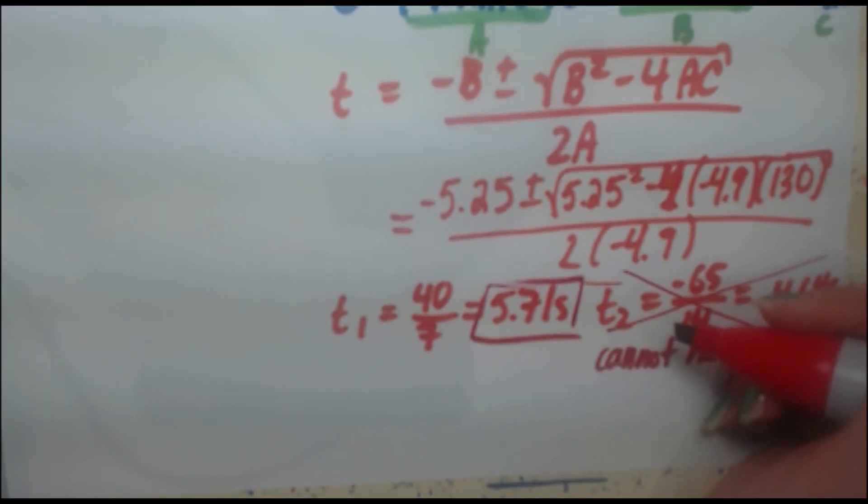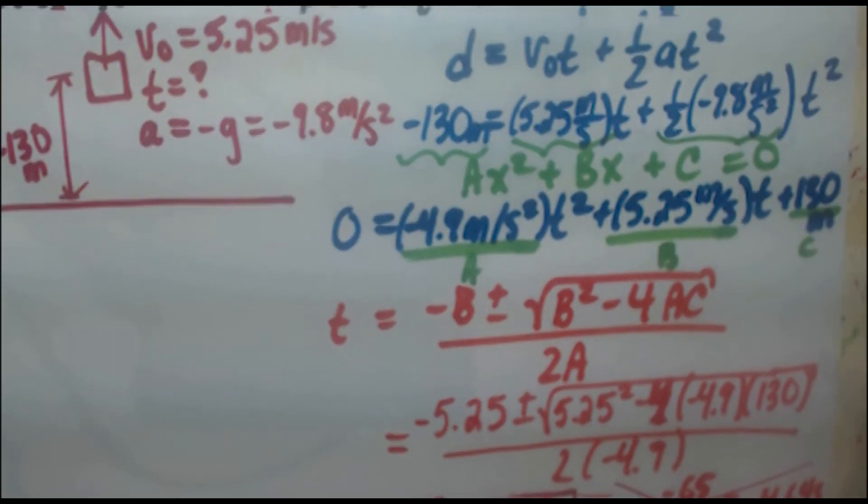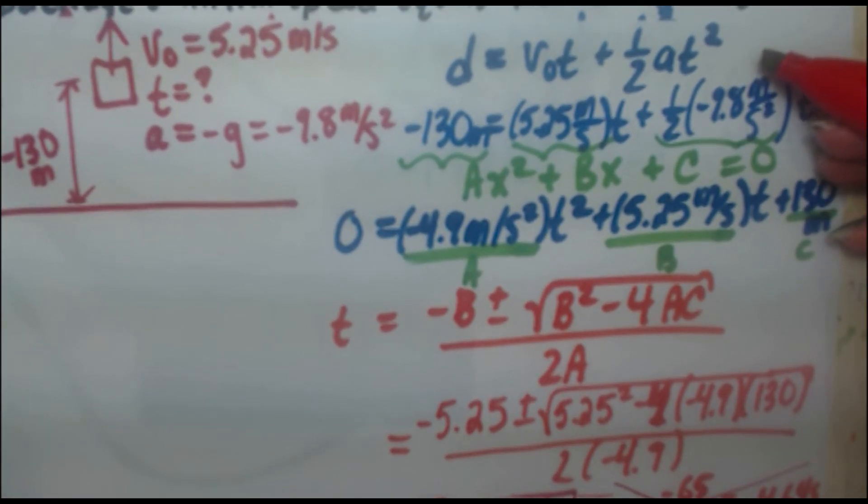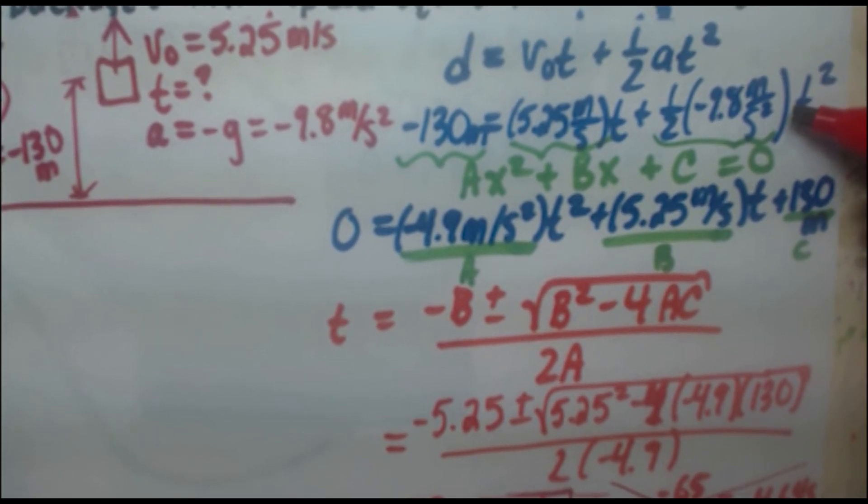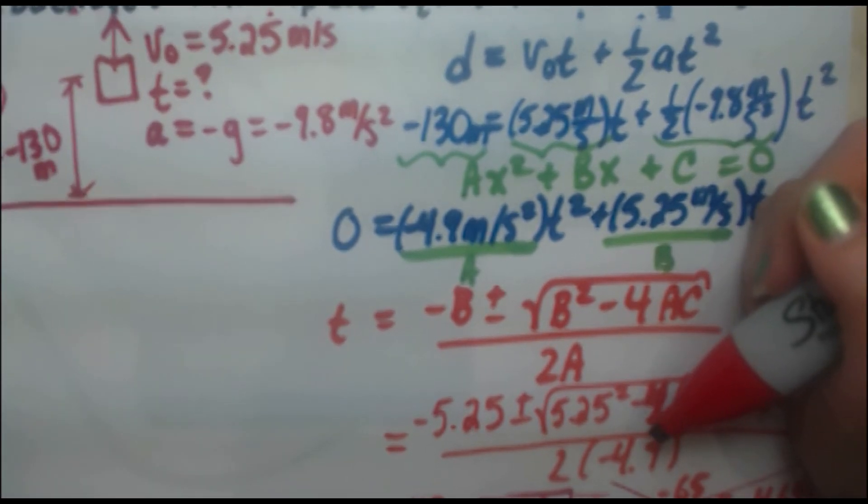So again, draw a picture, set your positive direction, choose a formula that has all the variables you know except the one you're looking for, plug it in and solve for the unknown variable. And sometimes that might require you to use the quadratic formula. And if it does, don't be afraid, just go ahead and plug it in. It's just math at this point.